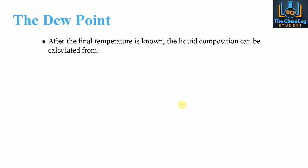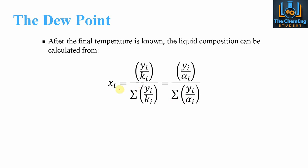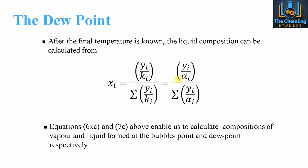After the final temperature is known, the liquid compositions can then be calculated. We use the same principle — we can use the K values or the relative volatility. If we only knew the K values for the individual components, we could still find the liquid compositions of each individual component. Likewise, if we knew the relative volatilities, we could still find the liquid compositions. These equations enable us to calculate the composition for the vapour and the liquid formed for both the bubble point and the dew point respectively.